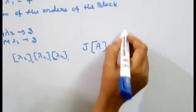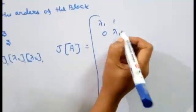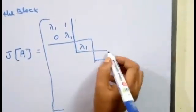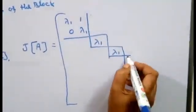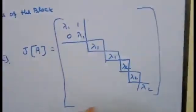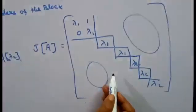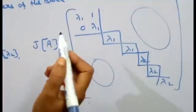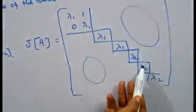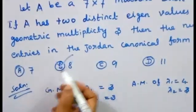The Jordan canonical form of A is a 7×7 matrix with: the order-2 Jordan block for λ1 [λ1, 1; 0, λ1], then two order-1 Jordan blocks with λ1, then three order-1 Jordan blocks with λ2 along the diagonal. The first block contributes 3 non-zero entries (2 diagonal + 1 superdiagonal), then entries 4, 5, 6, 7, 8 from the remaining blocks — giving 8 non-zero entries total. The answer is option 2: 8. Thank you very much.